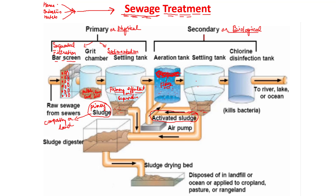The water obtained in the settling tank is treated with chemicals and is then ready to be released into rivers, lakes, oceans, or other water bodies. The activated sludge, which contains a lot of aerobic bacteria and fungal filaments, is then further treated. A small part of this activated sludge is pumped back into the aeration tank as inoculum.